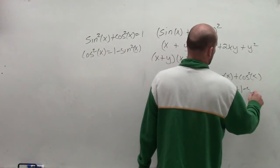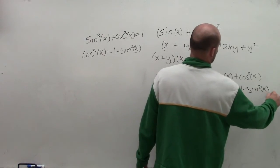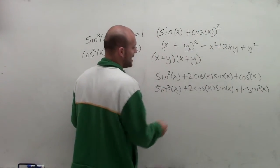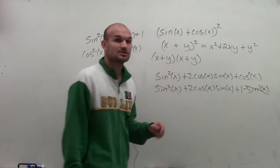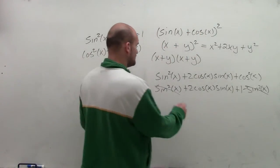So that's going to be 1 minus sine squared of x. What you notice is I'm going to have a positive sine squared of x minus sine squared of x, which is going to subtract to 0.